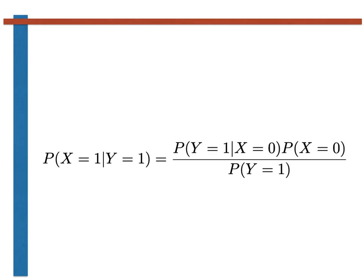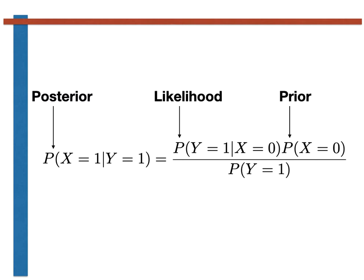Bayes' theorem is thus not simply a tool for solving a particular class of problems. Bayes' theorem instead allows us to refine the probability that we are sampling from a particular model based on the data we obtain. In the language of Bayes' theorem, we start with a prior probability encoding the probability of the various putative models we have for the data. We can then calculate the likelihood that each putative model would have generated the particular dataset we observed. Bayes' theorem is then used to calculate the posterior distribution — the conditional probability that the data was generated from each putative model given what we have observed.